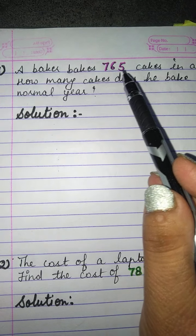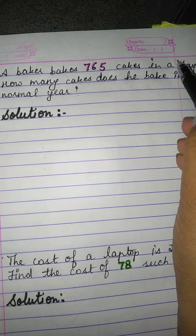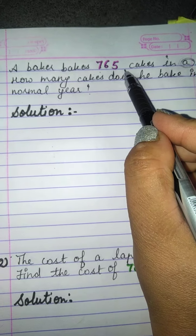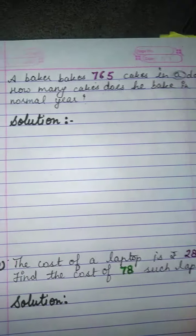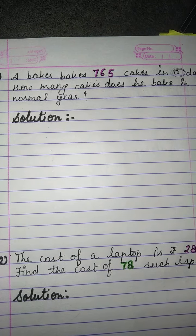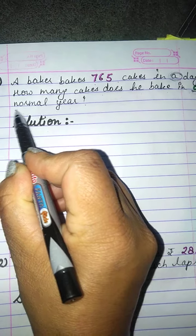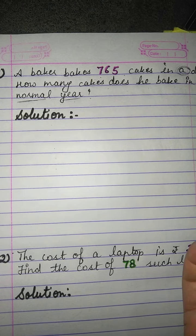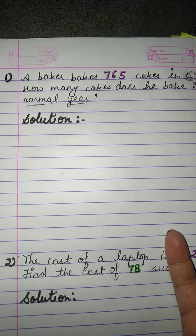A baker bakes 765 cakes in a day. How many cakes does he bake in a normal year? The second number is not directly given, but look — a normal year. Can you tell me how many days are there in a year? 365.